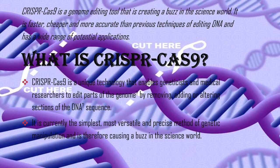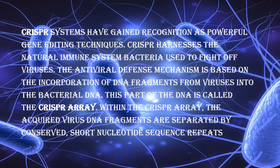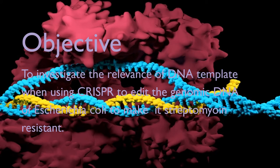We will not cure a genetic disease quite yet, but we will modify the genetic DNA of the bacteria. The objective of the project is to investigate the relevance of the DNA template when using CRISPR to edit the genomic DNA of E. coli — Escherichia coli — to make it streptomycin resistant.